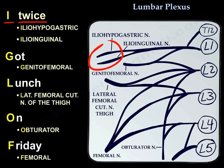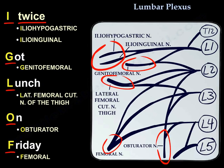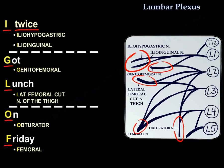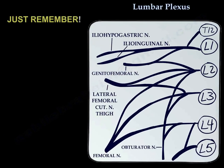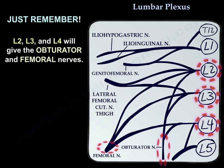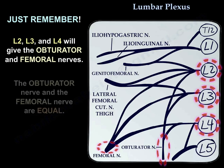Remember the mnemonic: 'I twice got lunch on Friday.' Two branches from one nerve root, two from two nerve roots, two from three nerve roots. If you can't remember anything, remember that L2, L3, and L4 give the obturator nerve and the femoral nerve, and those two nerves are equivalent in their nerve root origins.